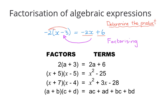In these examples you can see that the expressions on the left-hand side are in factor form and the expressions on the right-hand side consist of terms. When you factorize, you're given terms and you need to change the expressions so that you get one-term expressions in factor form.